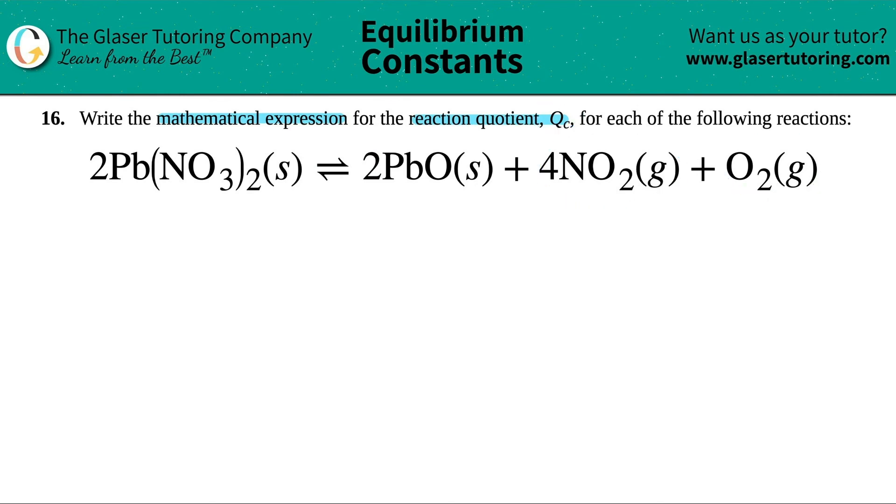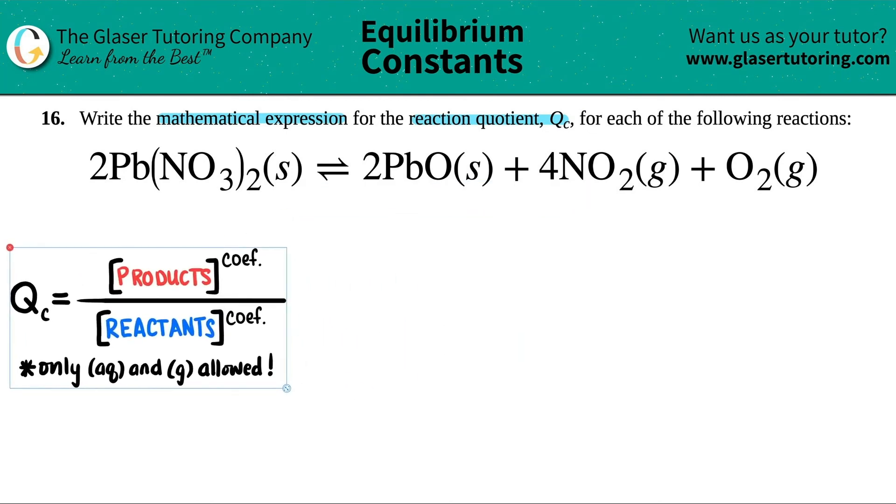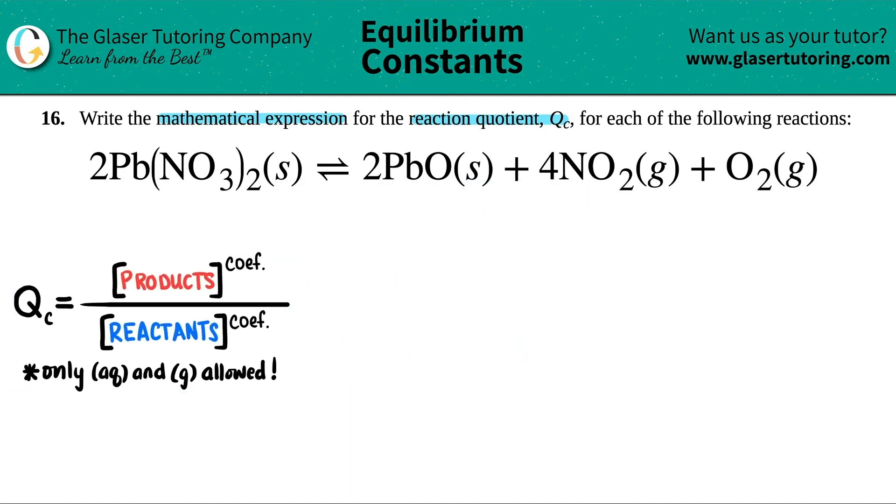Now the QC formula is a very generalized formula. It's this right here. So I'll just put it over here. And the C in QC stands for concentrations, aka molarities. So when we actually get to the math, we're only allowed molarity values in here. And we denote that by using these brackets. So anytime that you see brackets, that means molarity.